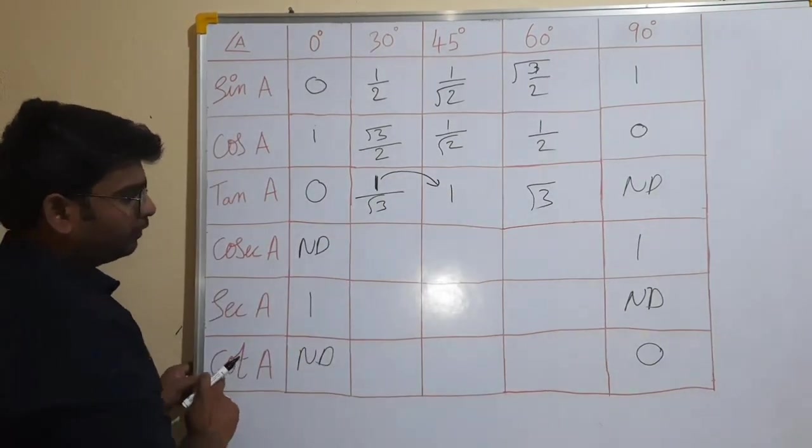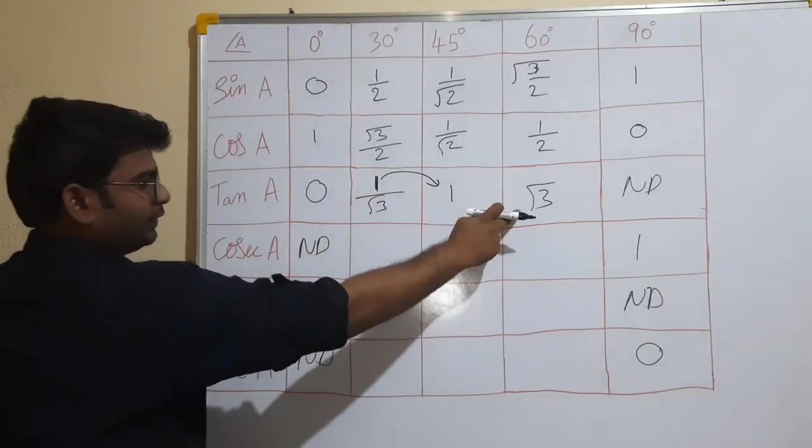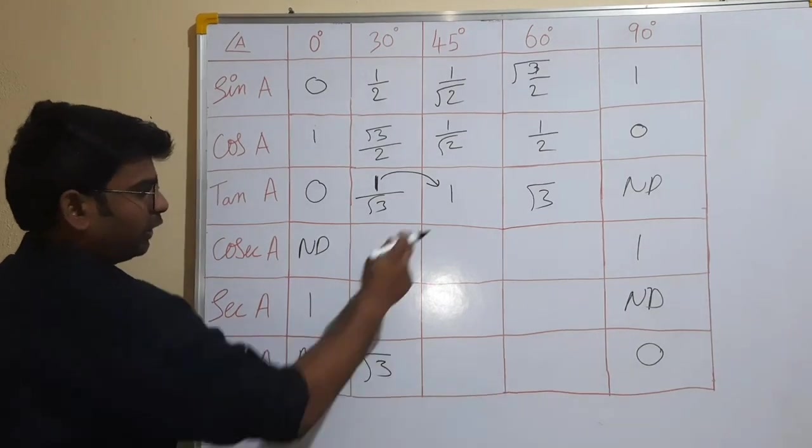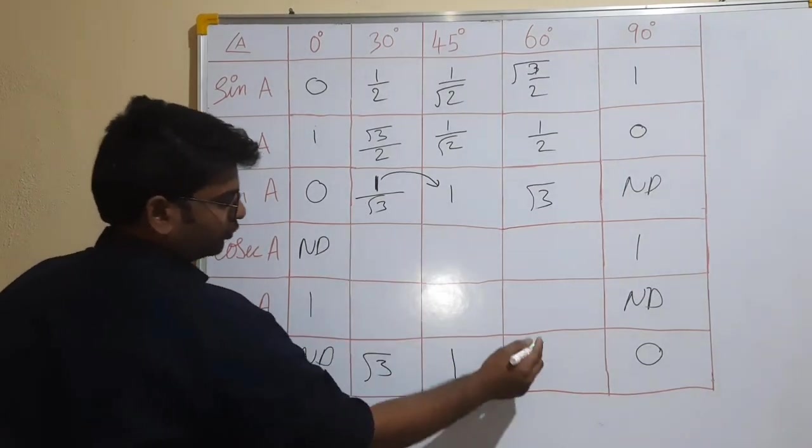That is it. So cot is the reverse. Tan is the cot. So root three, one, one by root three.